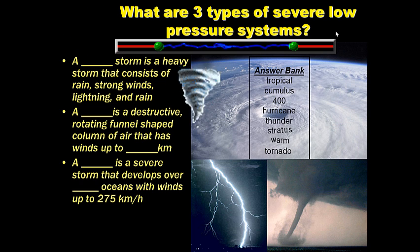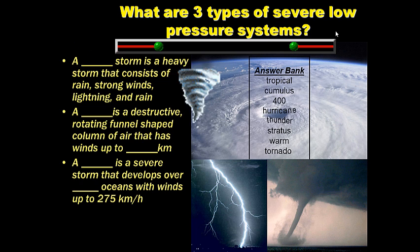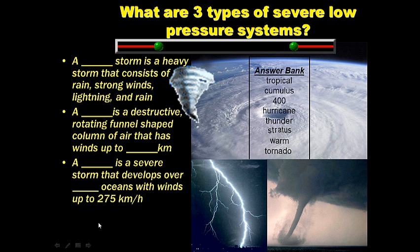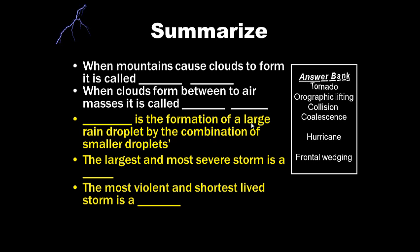For your last question today: what are the three types of severe low pressure systems? Question on the left-hand side, answer on the right-hand side — use the answer bank to determine which word best completes the blanks. Go ahead and pause this while you write. Then summarize, and for 20 points go ahead and finish your notes. That's day three — we'll see you next time for day four. Have a great evening.